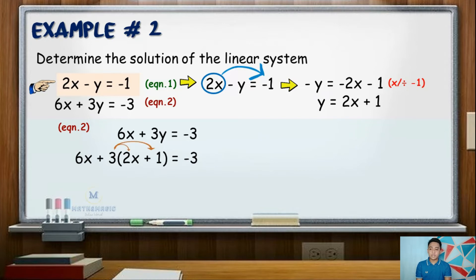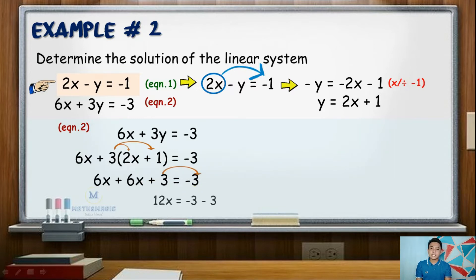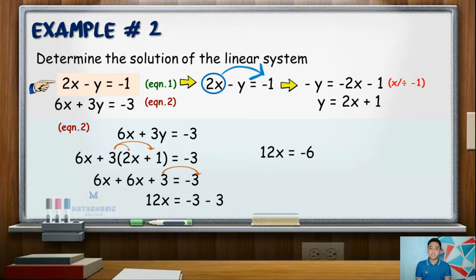Following the previous steps, distribute 3 to the binomial (2x plus 1). The equation becomes 6x plus 6x plus 3 equals negative 3. Combining like terms, 6x plus 6x is 12x. Transpose positive 3 to the right side, giving negative 3, and subtracting 3 from negative 3 gives negative 6. Then divide both sides by the numerical coefficient 12. 12x divided by 12 is x, and negative 6 divided by 12 is negative one-half. Thus, the value of x is negative one-half.